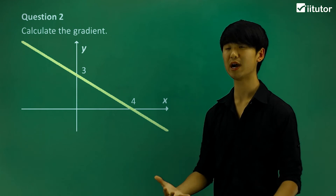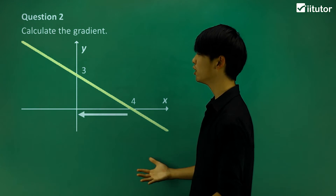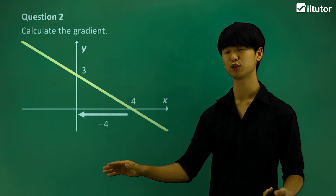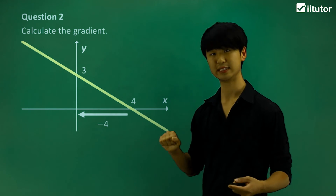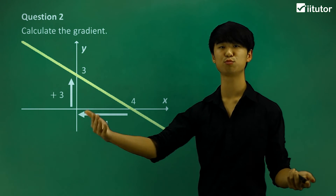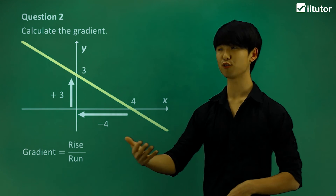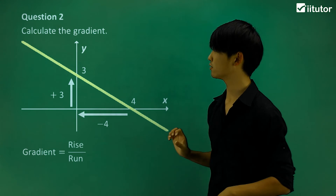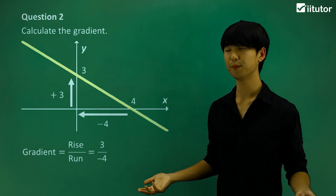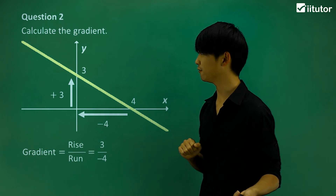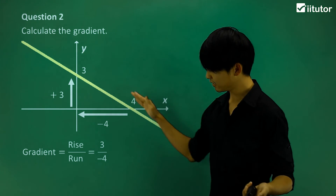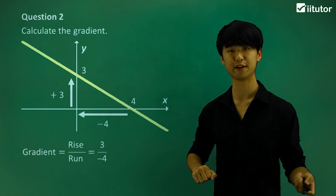We're going to deal with rise over run again. The run from 4 to 0 is negative 4, while the rise from 0 to 3 is positive 3. Gradient equals rise over run, so that gives us 3 over negative 4 — or in other words, negative 3 over 4 is the value of the gradient. And it is negative, so we do have a negative value.